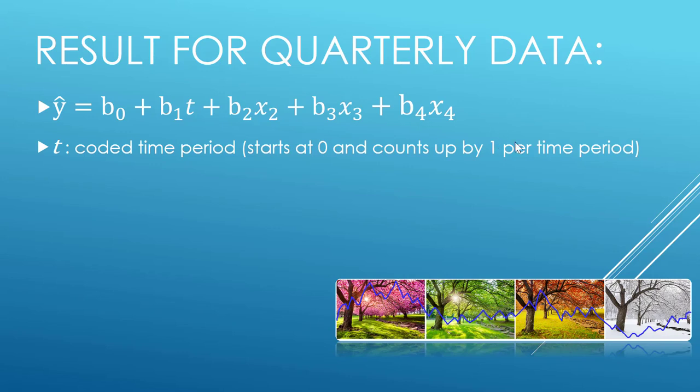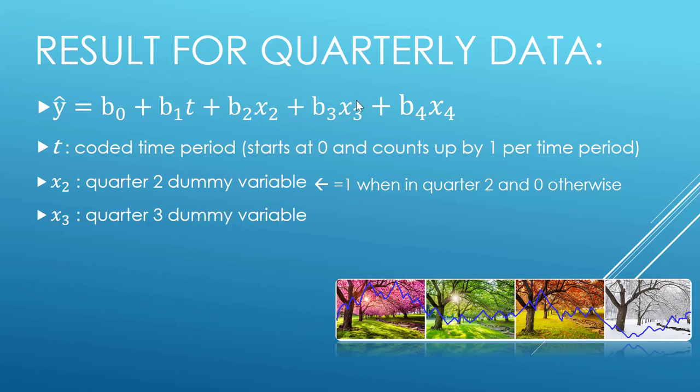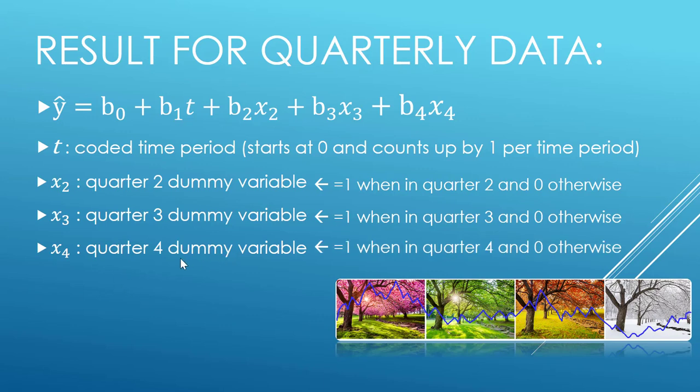x2 is our quarter two dummy variable. That dummy variable is going to equal one whenever our data is in quarter two and zero otherwise. x3 is going to be our quarter three dummy variable, so it equals one whenever we're in quarter three, zero otherwise. And x4 is going to be our quarter four dummy variable.